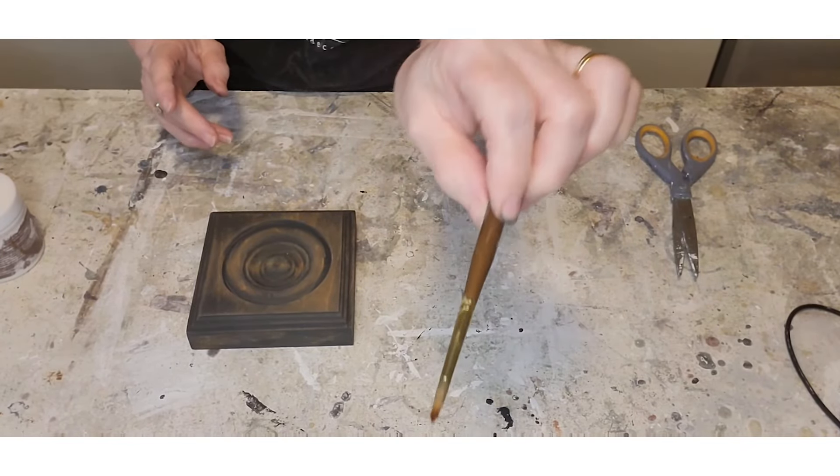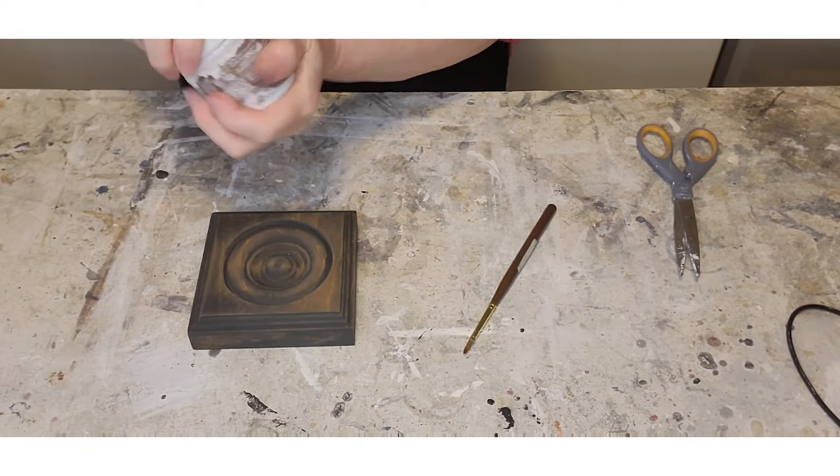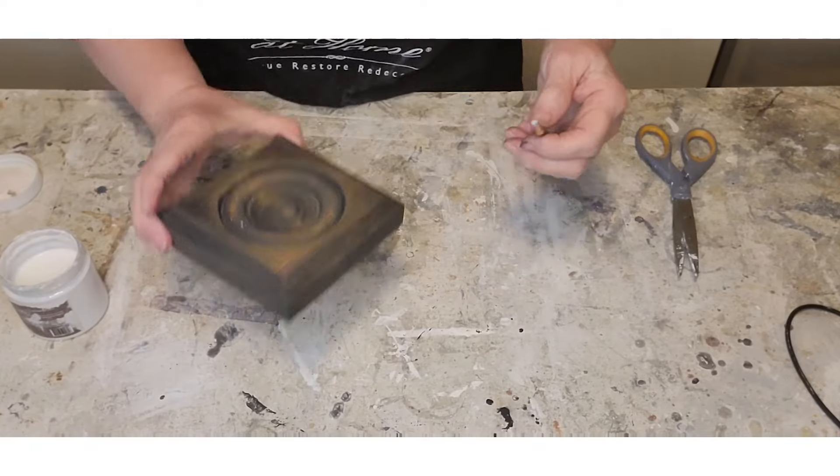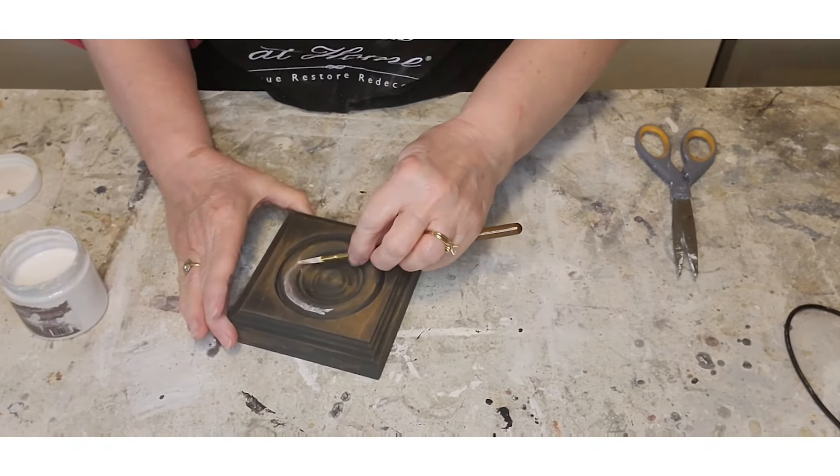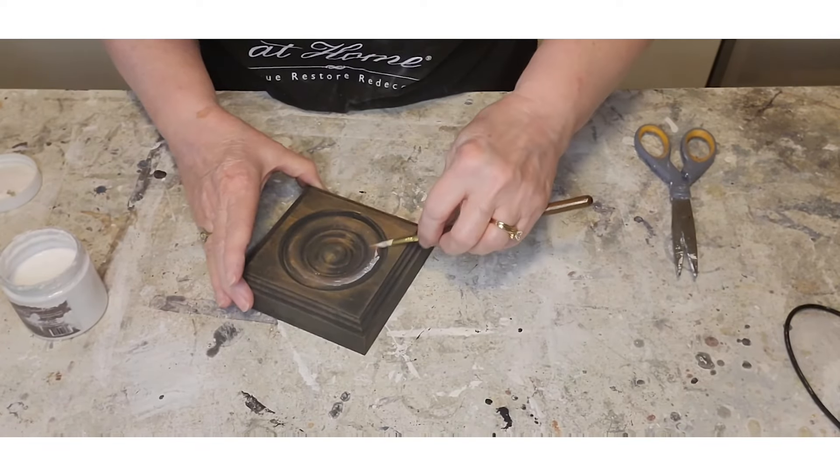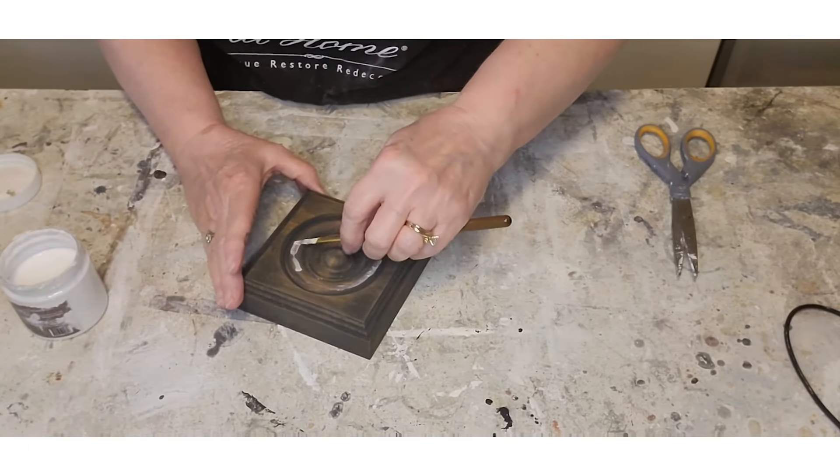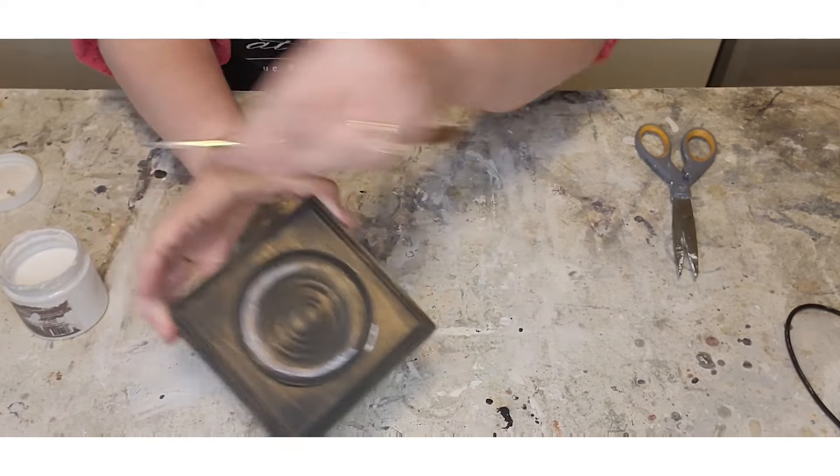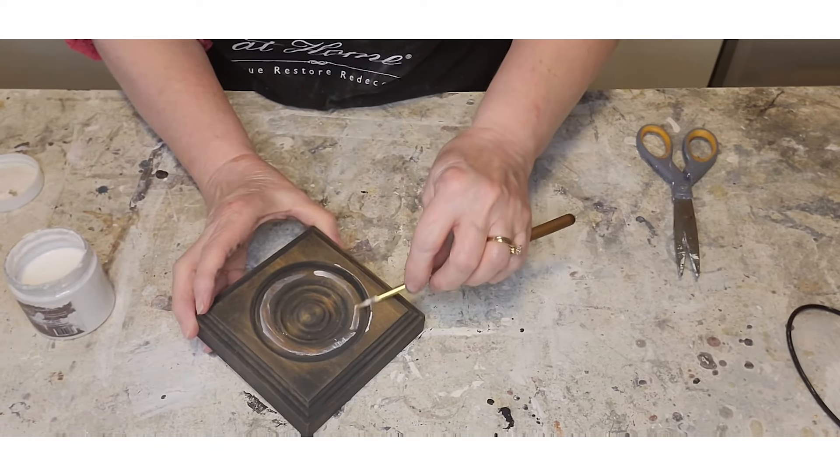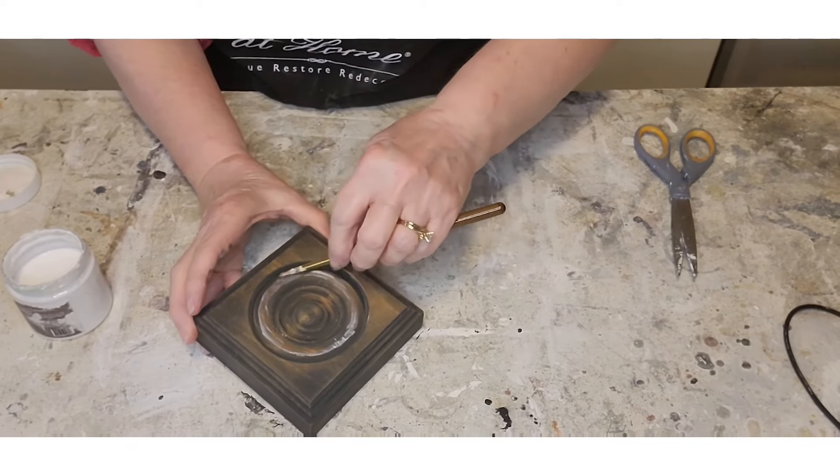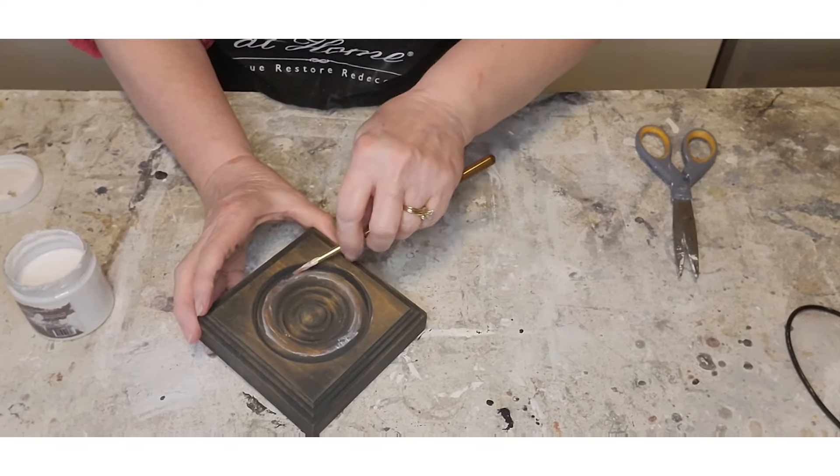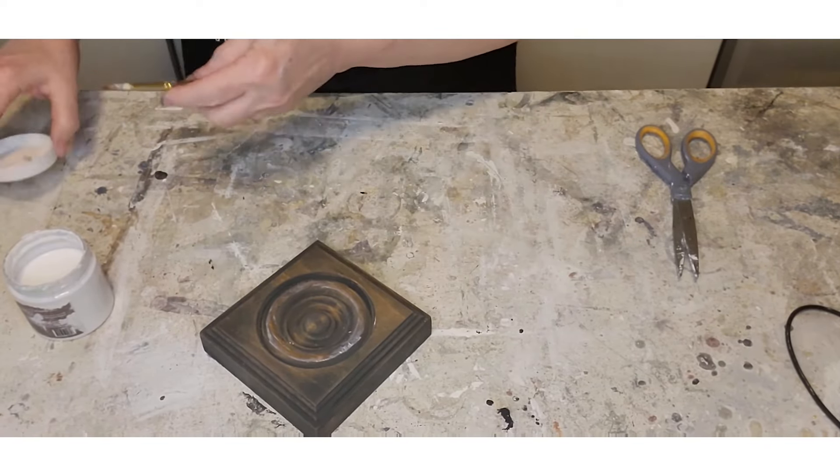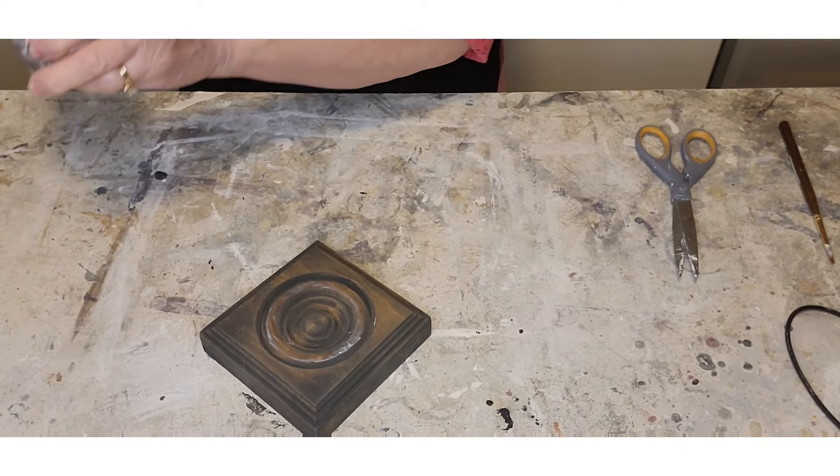Then for my gilding size, I just take a brush and hopefully I can get my size open because sometimes it likes to stick. Then I just take and dip my brush in here, get everything off there, and I just like to roll where I'm going to put my size. See what I'm doing here? Then you want to let this come to tack, and it goes on white but it will dry down clear, and I'm very sloppy with this today.